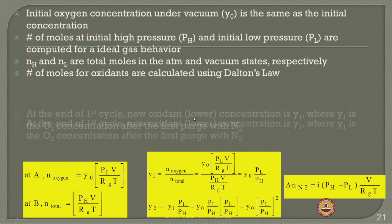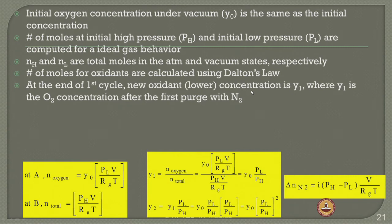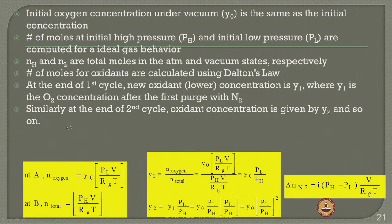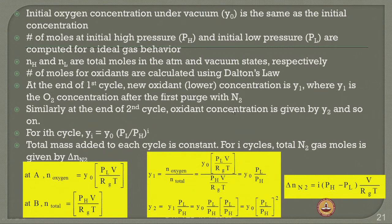At the end of the first cycle, the new lower oxidant concentration is Y1, where Y1 is the oxygen concentration after the first purge. As you keep purging, concentration changes from Y naught to Y1 to Y2 and so on. At the end of the second cycle, the oxidant concentration is Y2. For the i-th cycle, the oxidant concentration Y_i depends on Y naught and the pressure drop for the i-th cycle. For I cycles, the total nitrogen gas moles is delta N2, given by the equation in the slide.